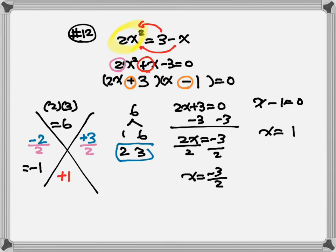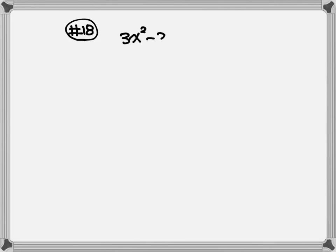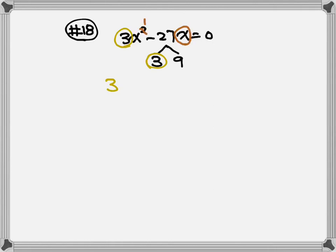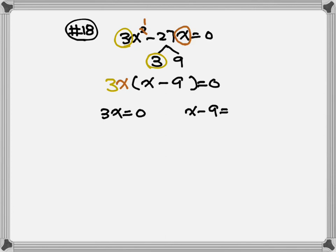Now let's look at number 18. We have 3x squared minus 27x equals 0. If you can factor out the common factor, you need to do that first. 3 can go into 27, so 3 is a common factor. Also, both terms have x, so we factor out x as well. So 3x goes out. Inside the parentheses we have x minus 9. Set each factor equal to 0: 3x equals 0 gives x equals 0; x minus 9 equals 0 gives x equals 9.